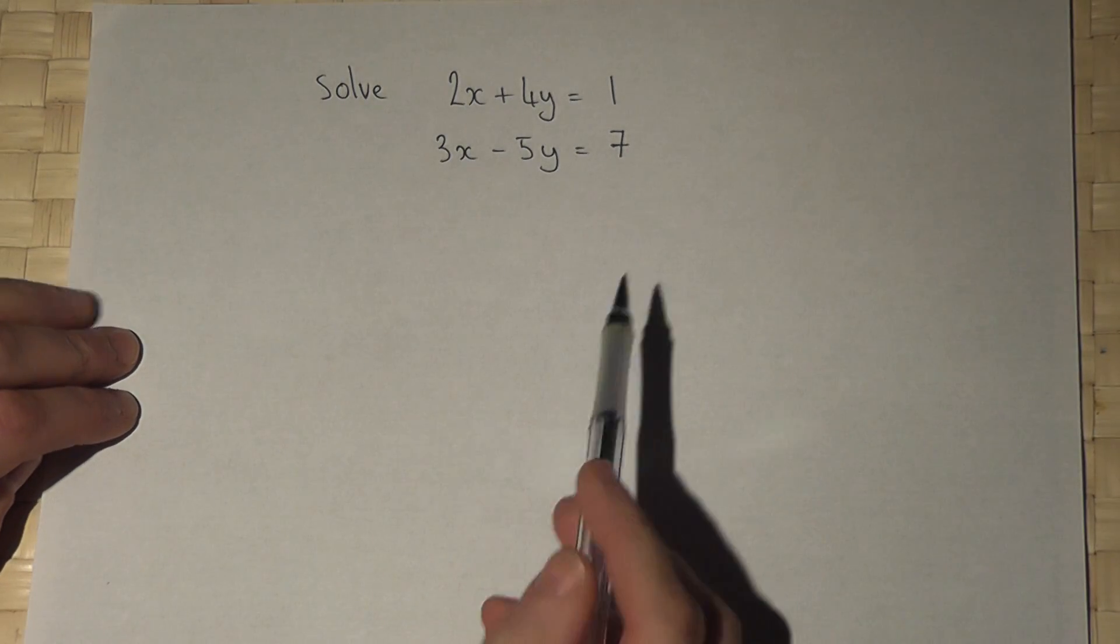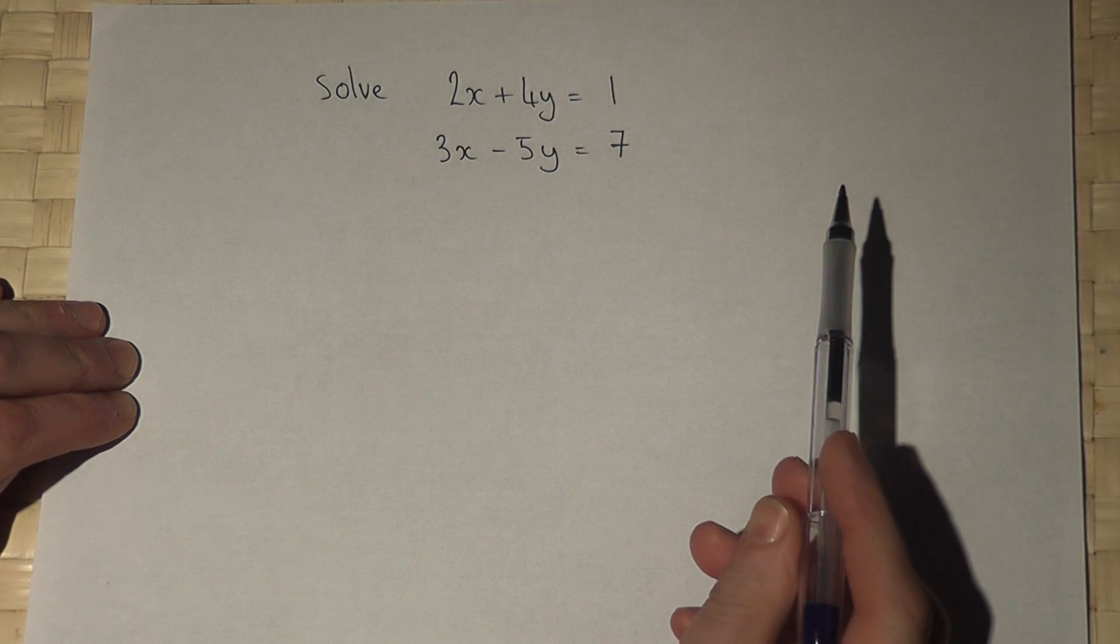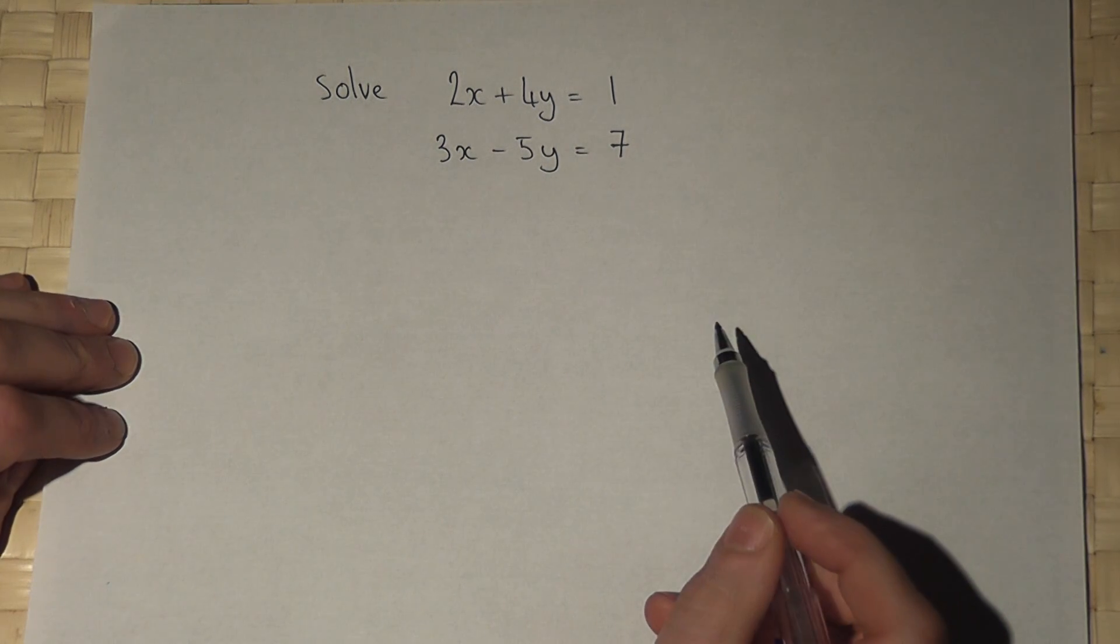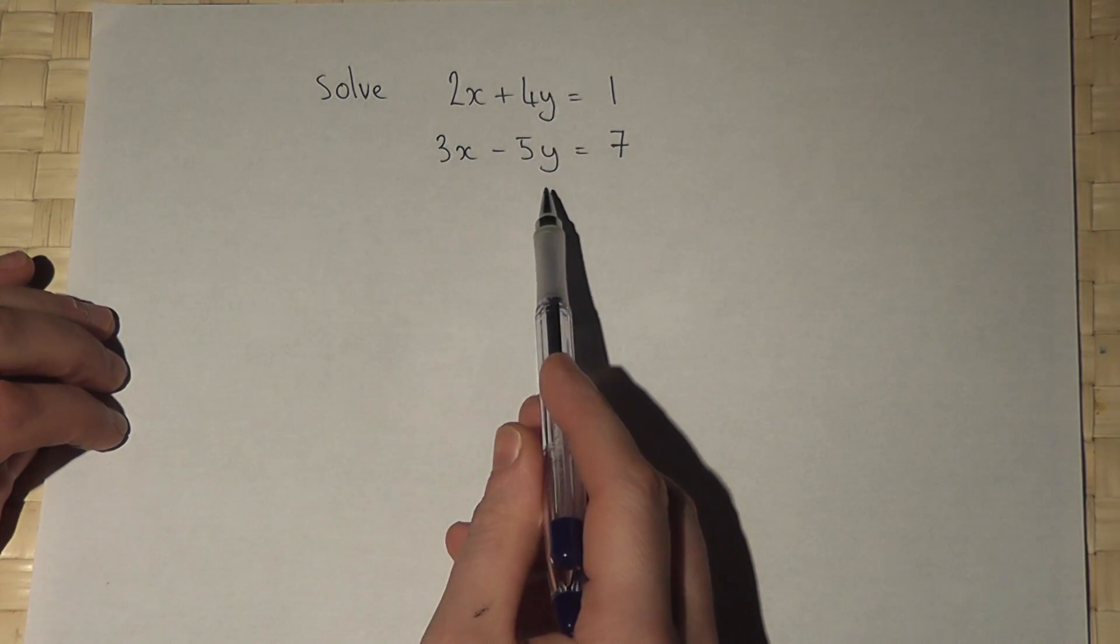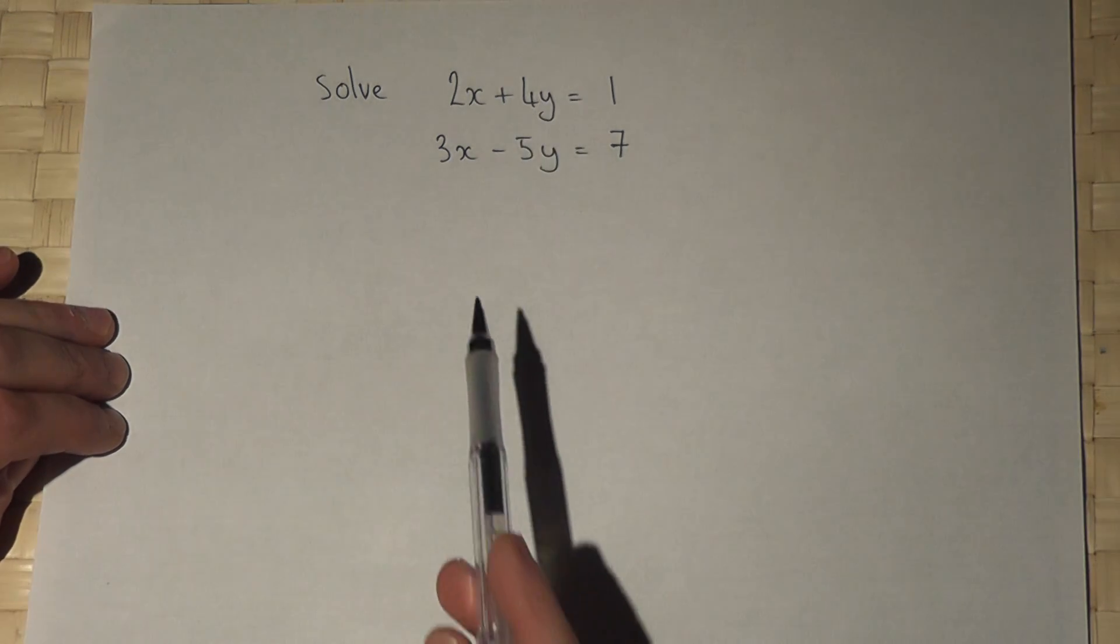In this video we have to solve this pair of simultaneous equations. Now my preferred method is to times the top and bottom equation by given numbers to make the same number of y's.